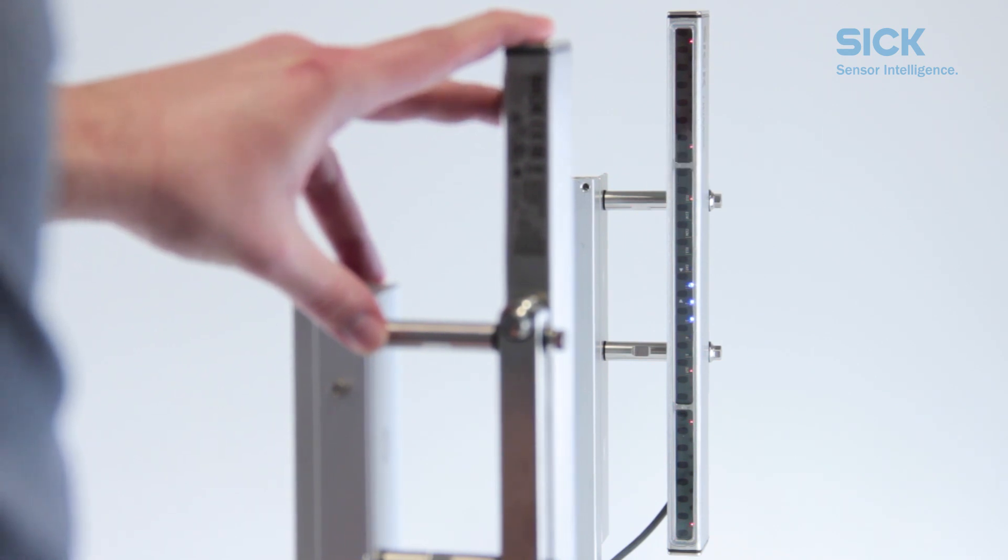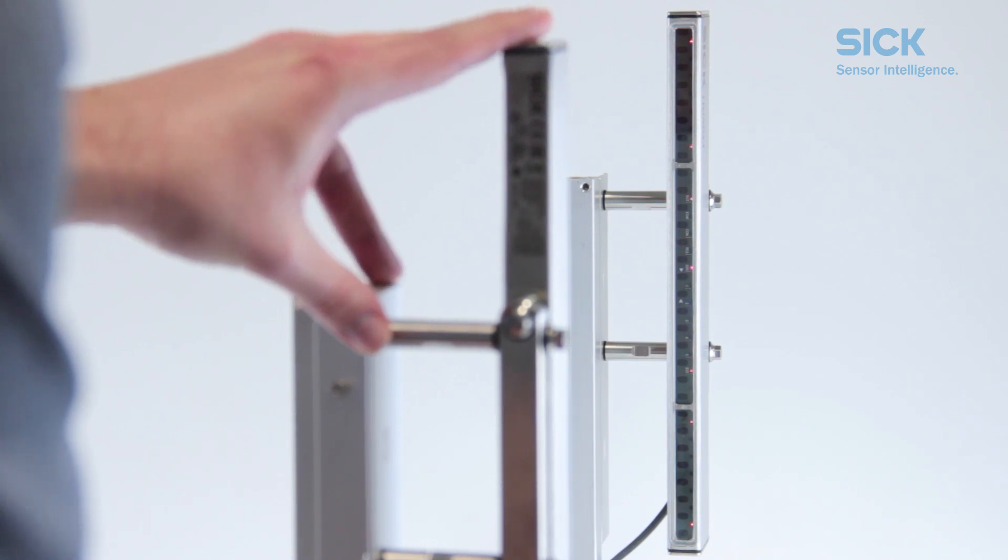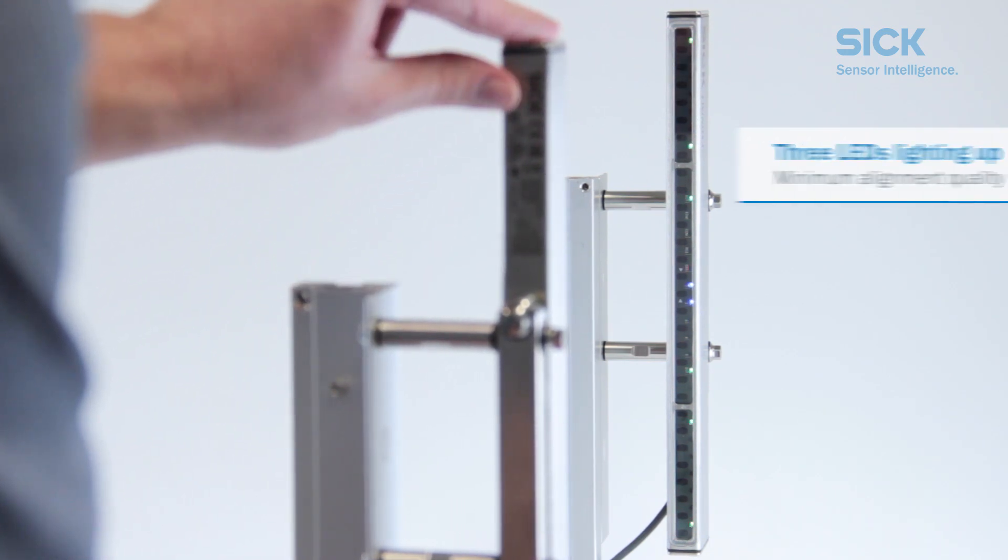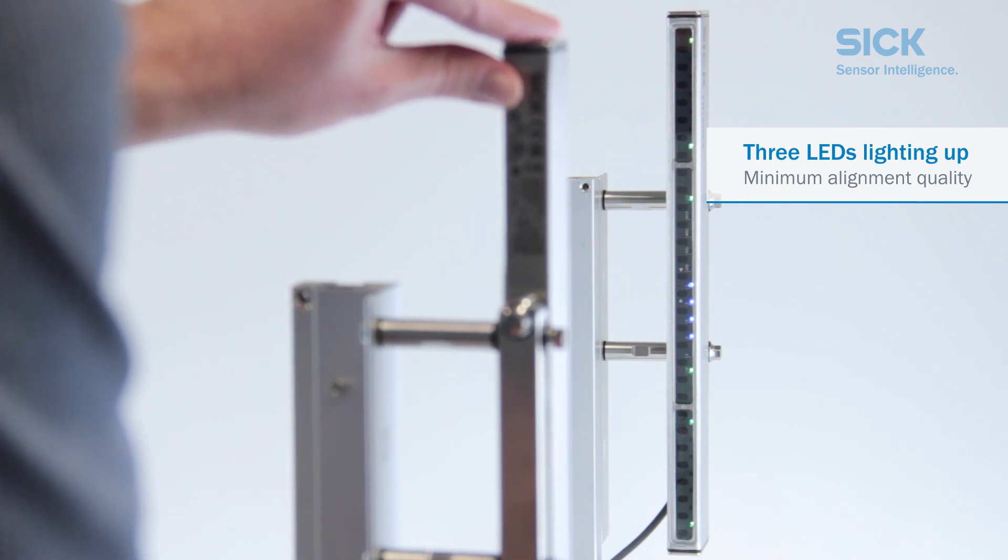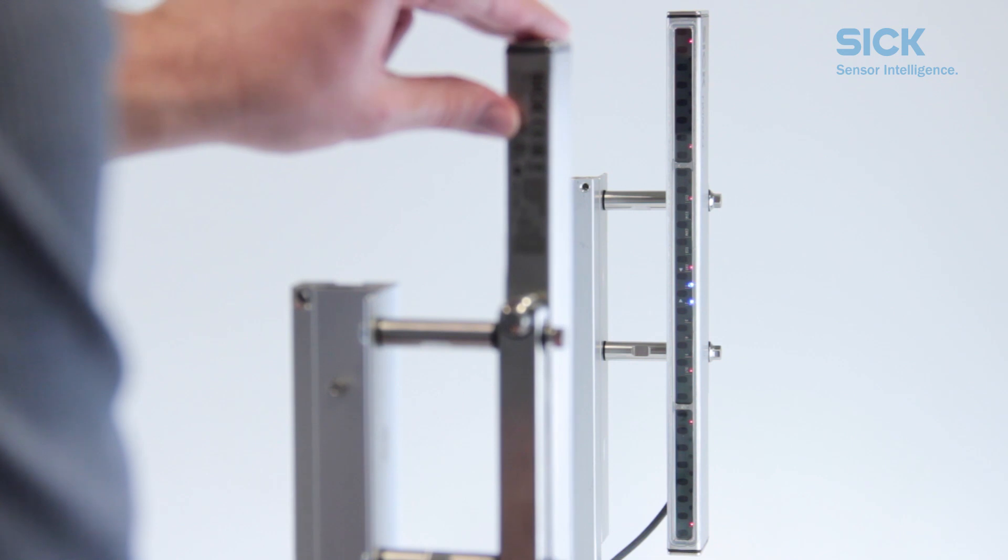Proceed with the alignment so that more LEDs light up blue. You will know that the alignment quality is good enough when at least three LEDs have lit up blue. If this is the case, you will also notice that the safety light curtain switches to green.